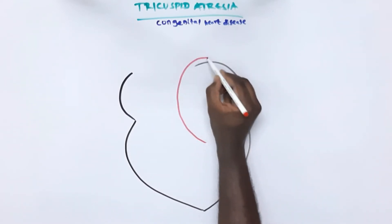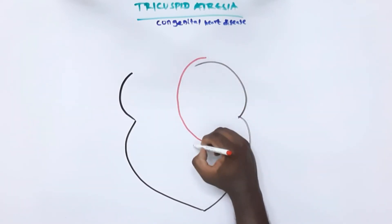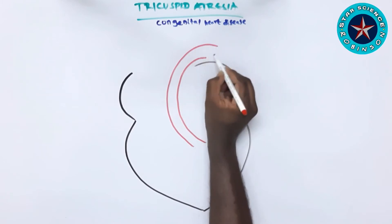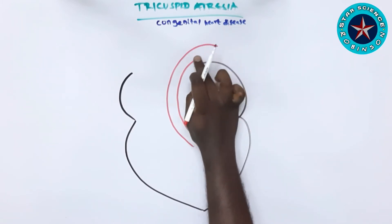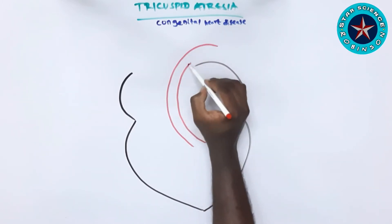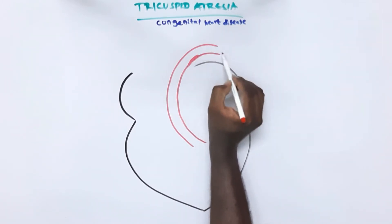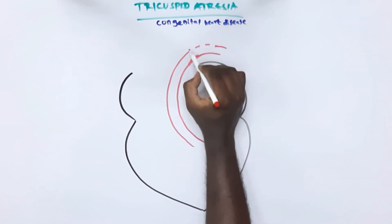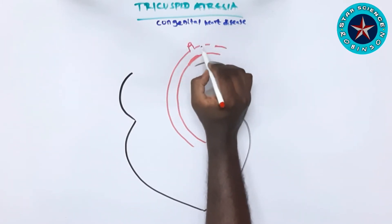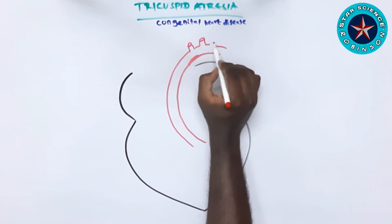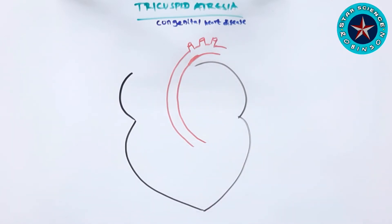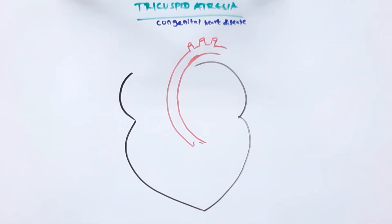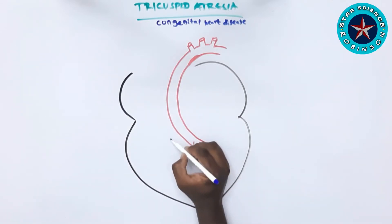In the right chambers, the CO2 blood from the right atrium should be sent to the right ventricles, and from there to the pulmonary artery, and from the pulmonary artery to the lungs for the exchange of gases. But here, this will not be done because there will be no opening of the tricuspid valve. This is the condition of tricuspid atresia.